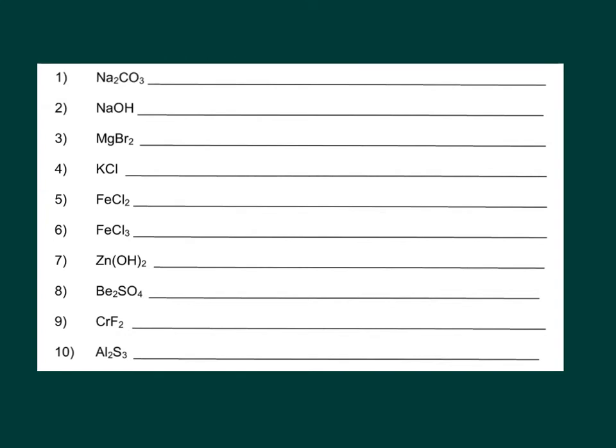First things we're going to do: we're going to underline all of the metals. Remember, metals come first, they are our cations, so that means they have a positive charge. I'm going to underline them in pink. We have Na, that's a metal. Na. Mg. K. Fe, that's iron. Fe. Zn, that's zinc. Beryllium. Chromium. And aluminum.